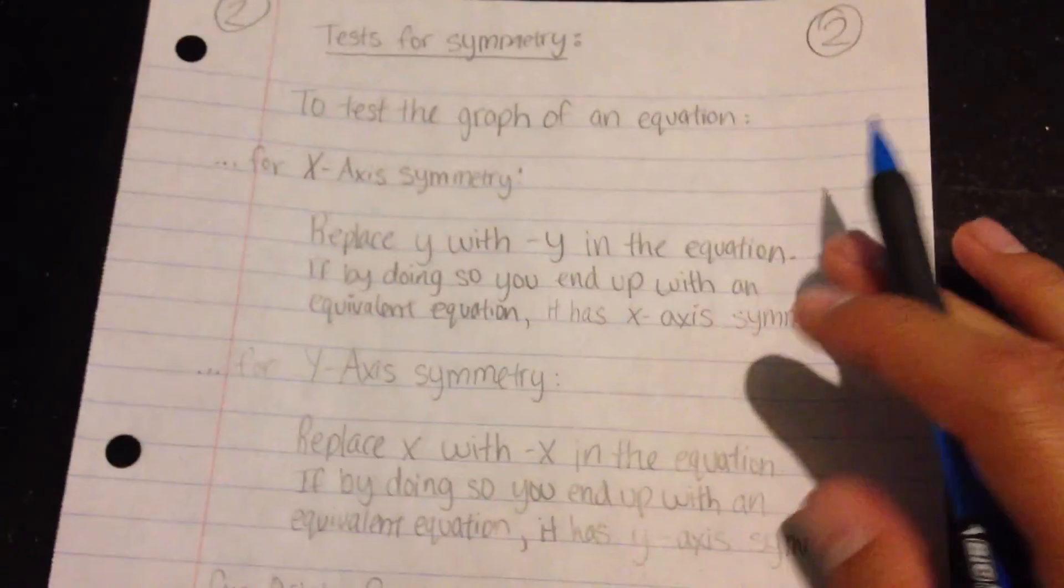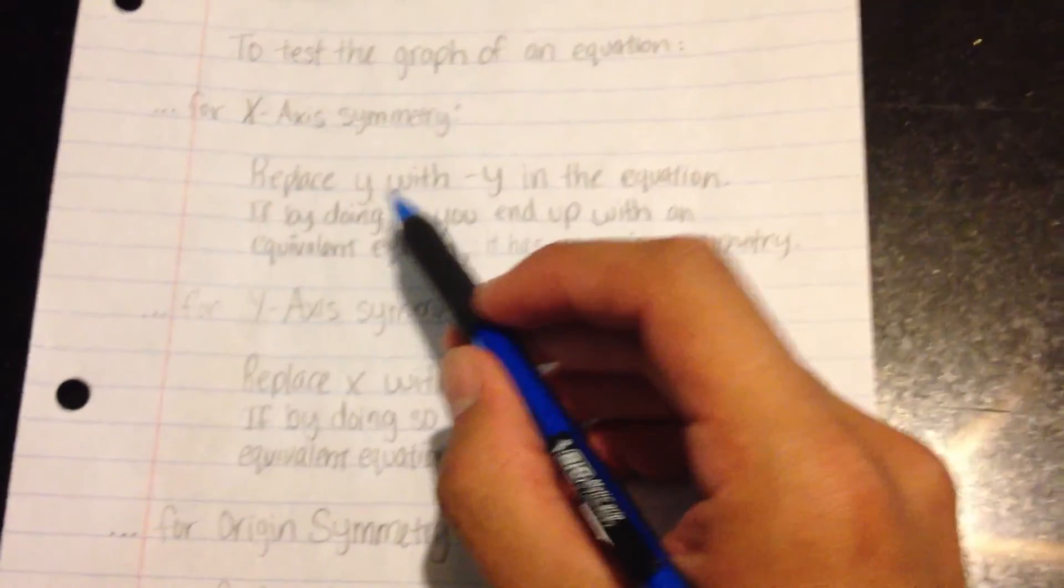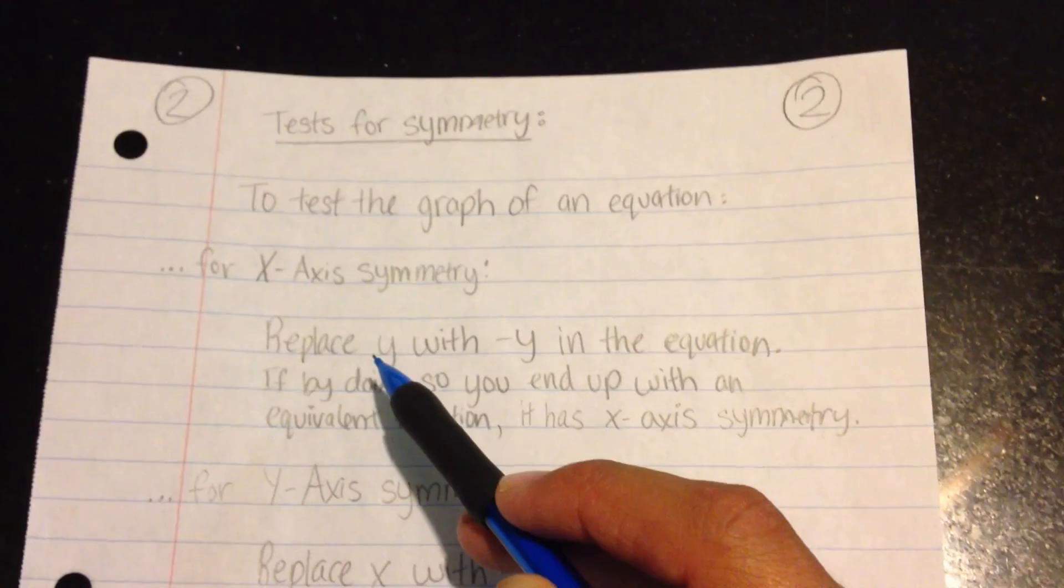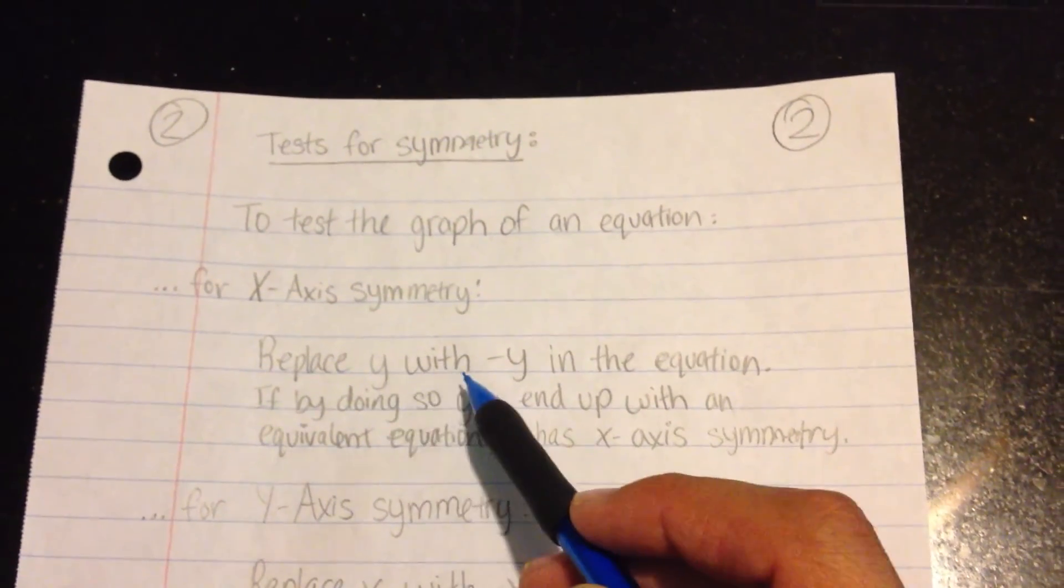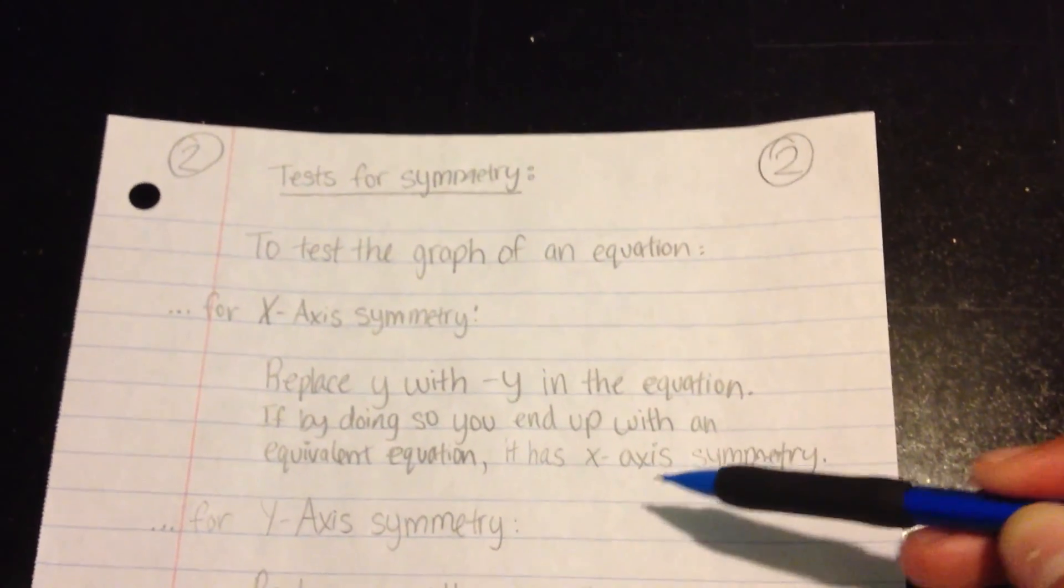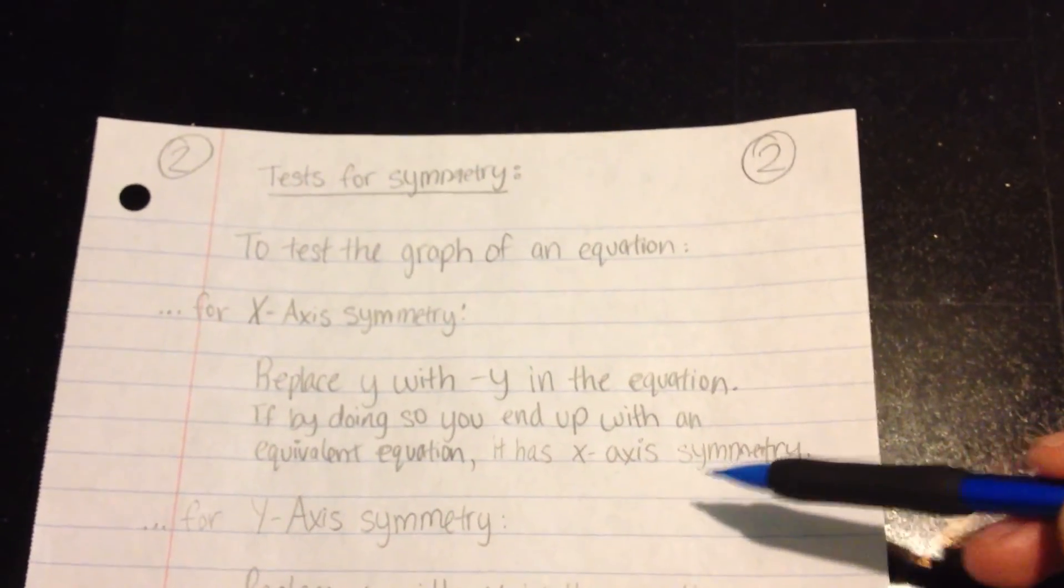And to test that, what you need to do to test for all three of those symmetries, I'll explain right now. So, for x-axis symmetry, what you need to do is replace any y's with negative y in the equation. And if by doing so, you end up with an equivalent equation to the one you started up with, it has x-axis symmetry.